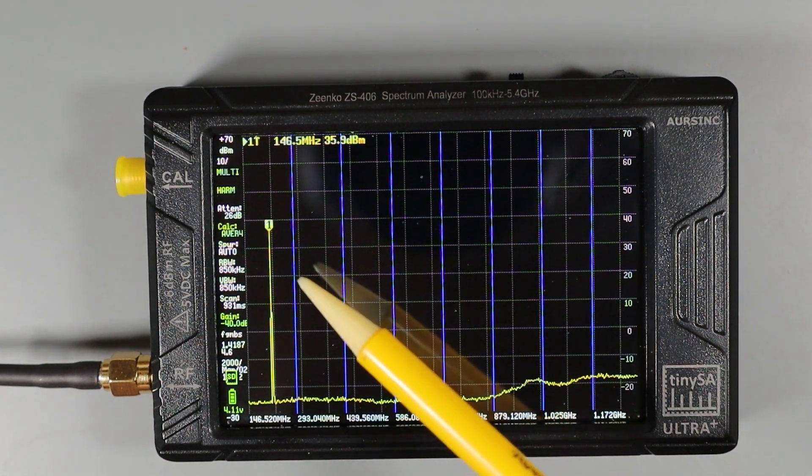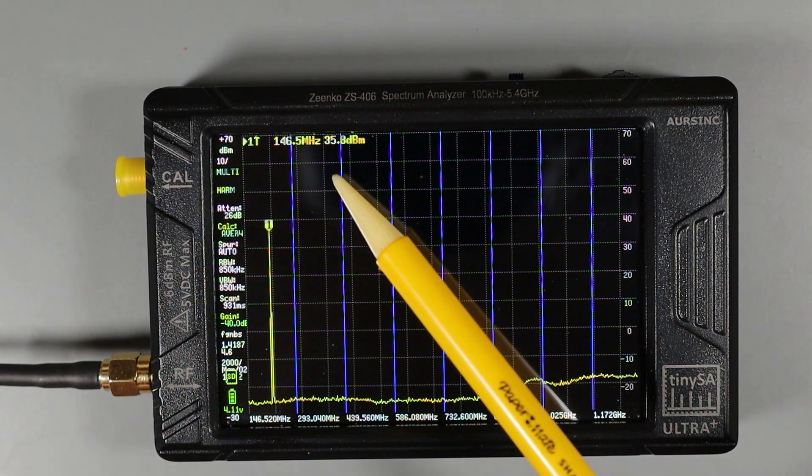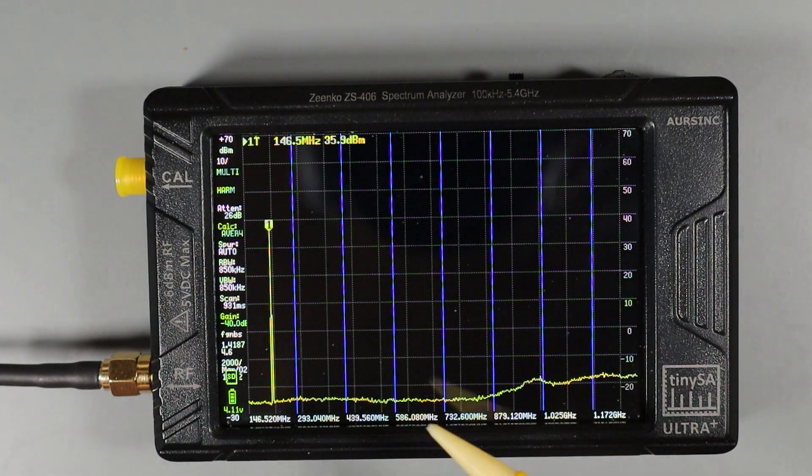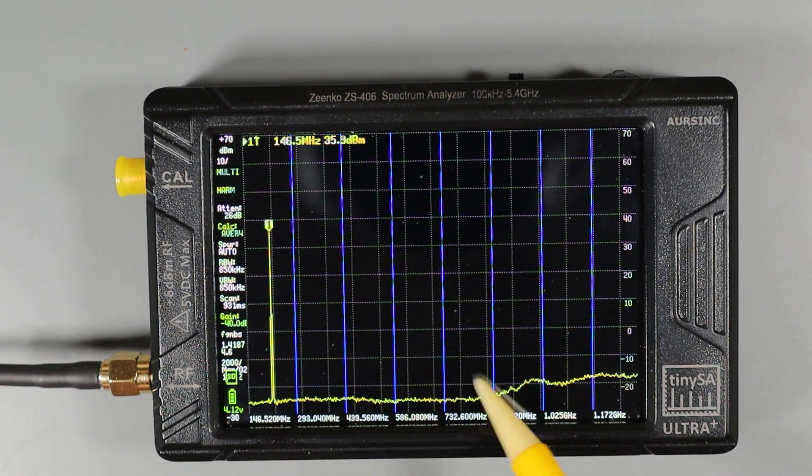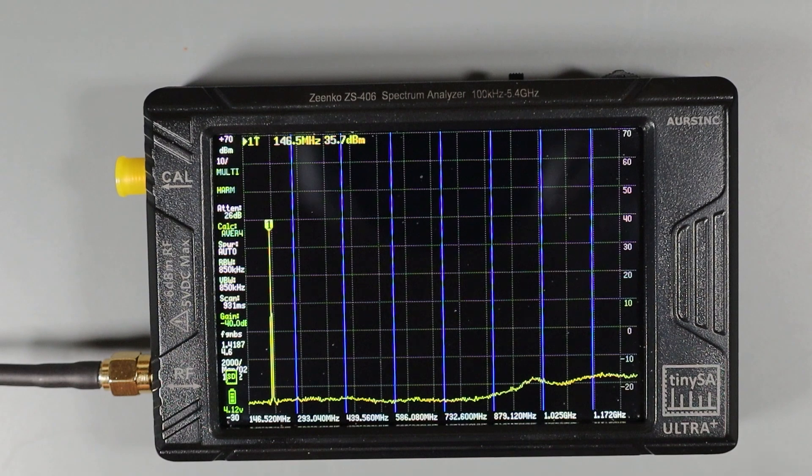And now that things have settled, you can see our primary frequency is measuring about 36 dBm, like we saw on the Baofeng. And as expected, we're not seeing any harmonic spikes at all from the Kenwood.